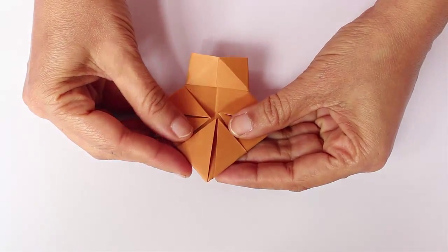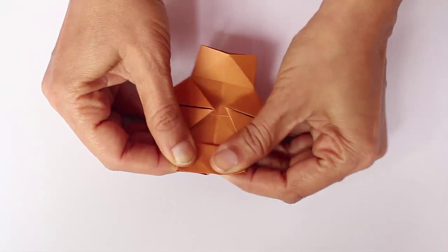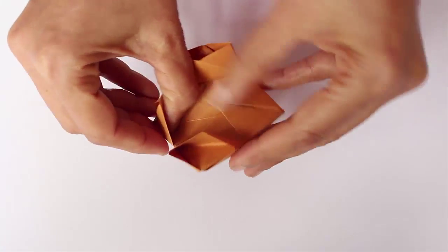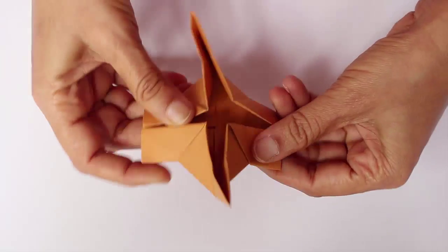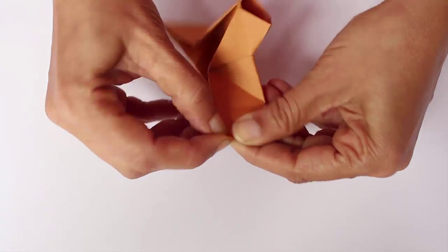You open and press two squares to make two rectangles. Open up the opposite rectangles to make two standing triangles.